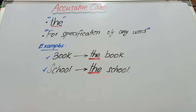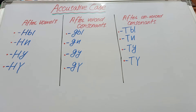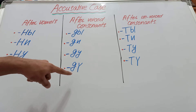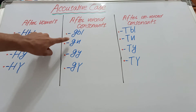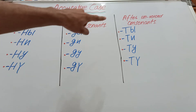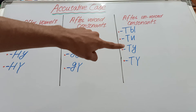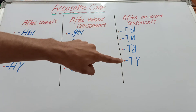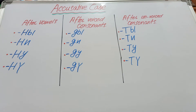Now we will talk about the table for the accusative case endings. This table says that after vowels you can add na, ni, no, or no according to vowel harmony. After voiced consonants you can add any one of these endings — the, do, and do — according to vowel harmony. After unvoiced consonants you can add the, to, and to, again according to vowel harmony. To understand the accusative case, you will also need to learn vowel harmony. Let's now look at some examples to make the concept clearer.